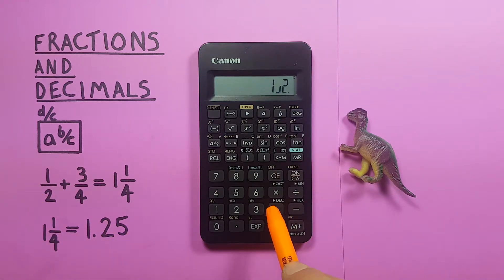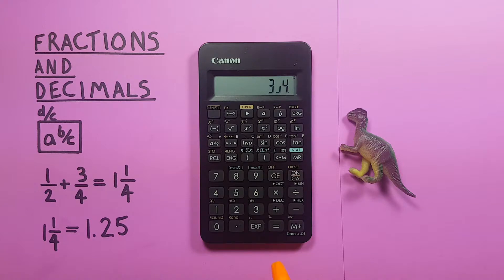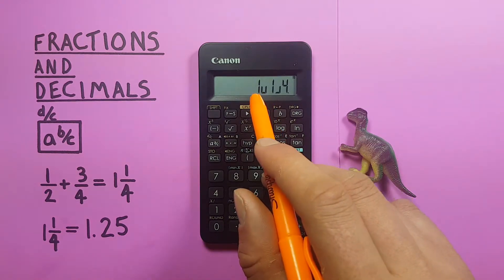So then we press plus 3 a b over c 4. There we go, it's a fraction as well, and press equals and it gives us this 1 and 1 quarter.